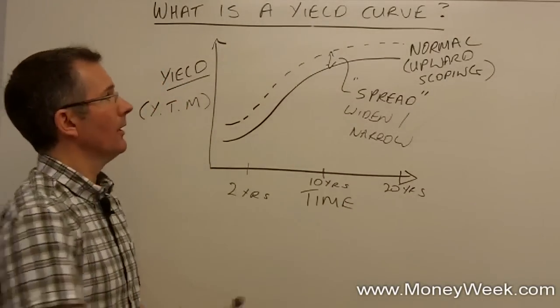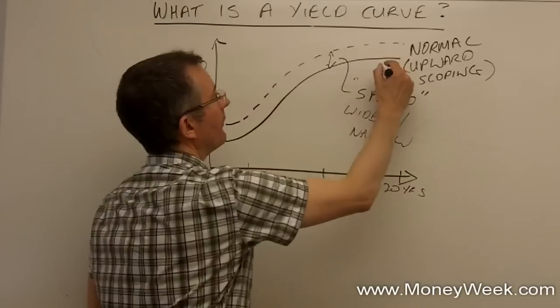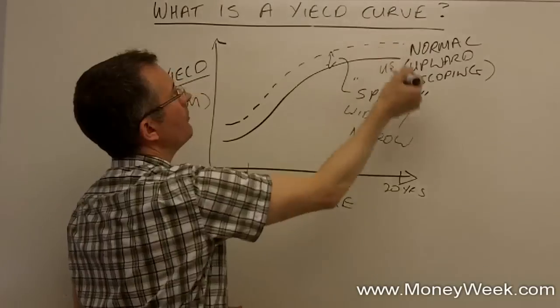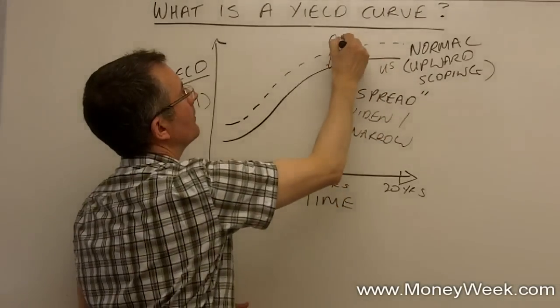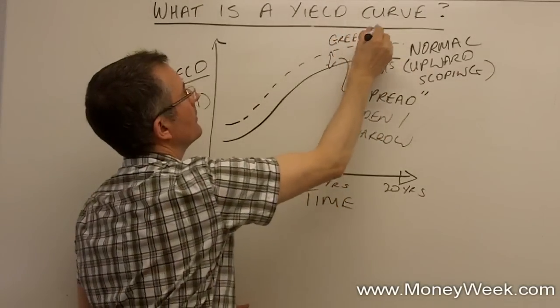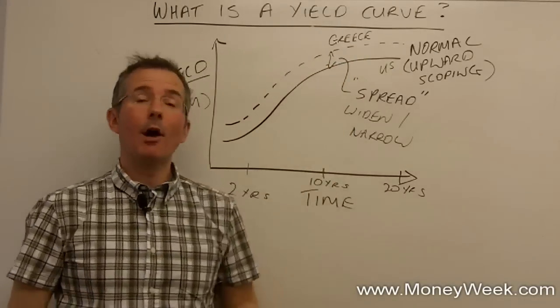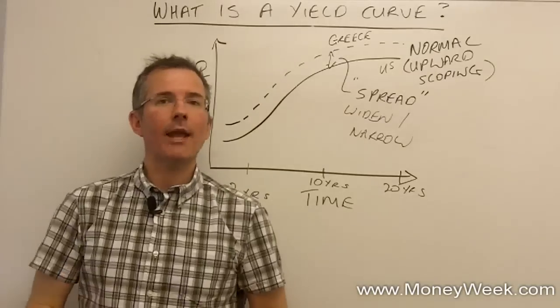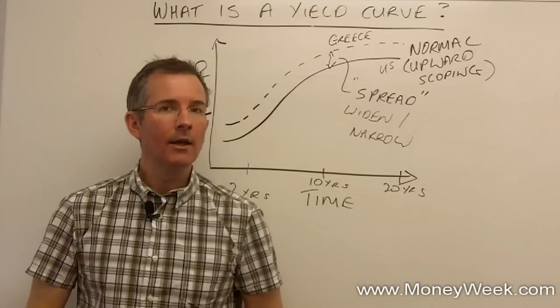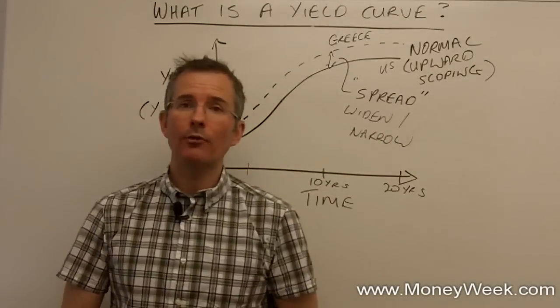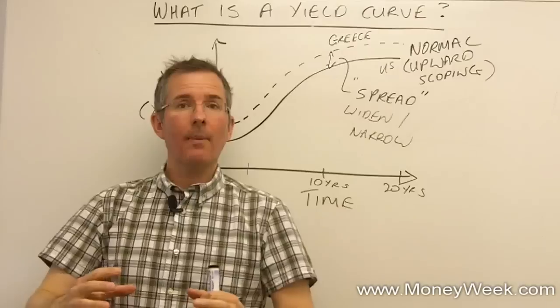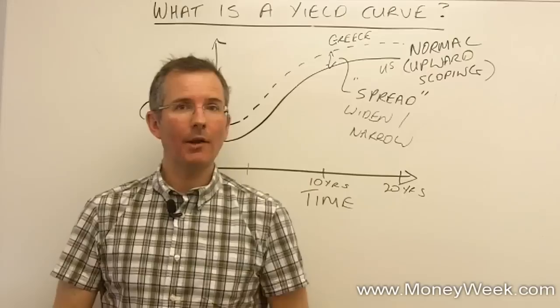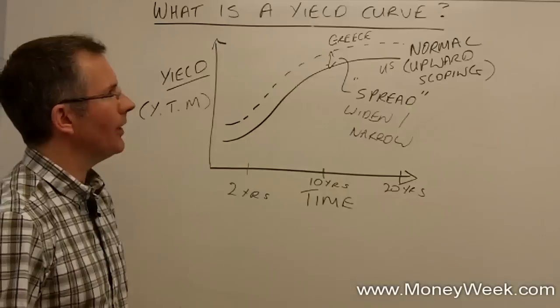Okay. The other point to bear in mind, of course, is that this could be, for example, the US. And that could be, for argument's sake, some Eurozone country in a little bit of trouble. Greece. Quite a big spread at the moment between those two. Because the US government is considered relatively safe, discounting the fact that S&P put a warning on it recently. Whereas Greece is obviously in a bit of trouble. So, the gap there between Greek bonds and US bonds with similar characteristics is a very wide one at the moment.